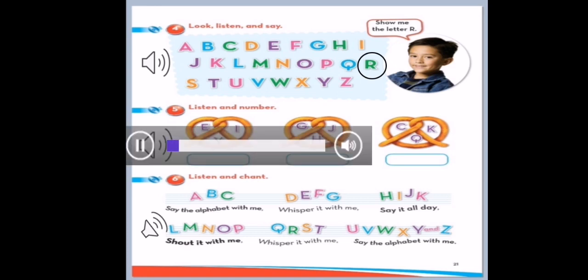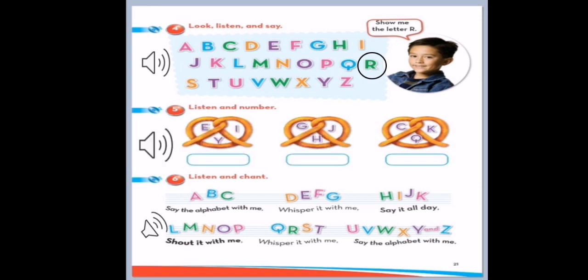Unit 2. Lesson 3. Page 21. Exercise 5. Listen and number. Number 1. C, Q, K. Number 2. E, Y, I. Number 3. G, H, J.